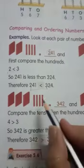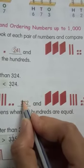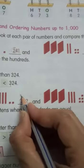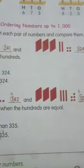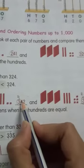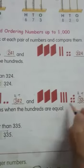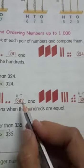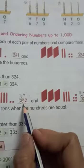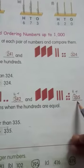Here we have the numbers 342 and 335. If both numbers have the same digit on the hundreds place, then we should compare the numbers on the tens place. So we have 4 and 3 on the tens place, and 4 is greater than 3. That means 342 is greater than 335. This is the comparison of numbers.